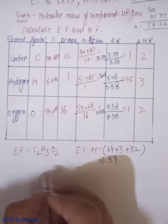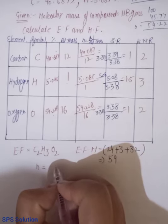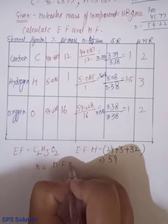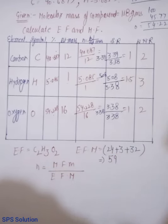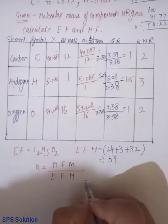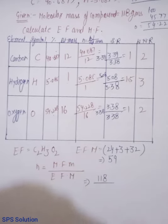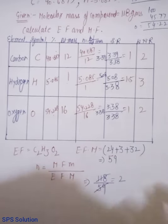Now, I will be calculating, ab bahut thoda sa kaam reh gaya hai, N ki value. N ki value ke liye relationship hum wahi use karenge. Molecular formula mass by empirical formula mass, okay? So, put kar do value. It is 118, molecular formula mass is given to us. 59, empirical formula mass is ourself we have calculated. That is equals to 2.